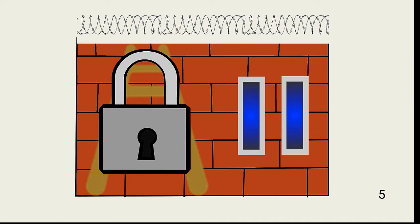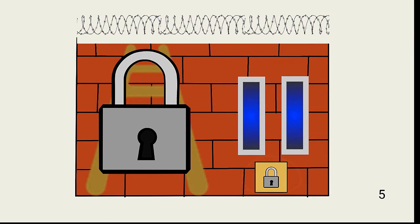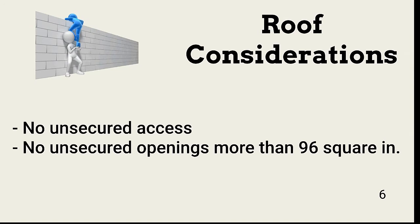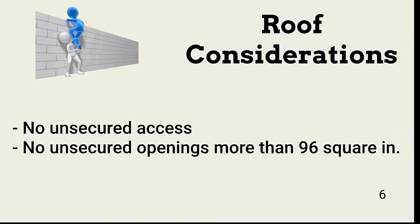Utility access panels or other access portals should be locked with controlled access to keys or lock codes. Roof access for any structure containing critical infrastructure or data with elevated classifications must be controlled. All ladders or stairs, internal or external, should be locked with close control over keys or lock codes.